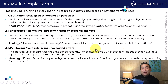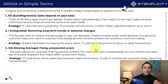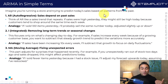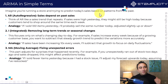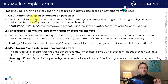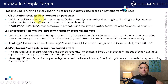Let's take a look at a practical example. Imagine that you're running a store and you're trying to predict today's sales based on patterns from the past — predicting the future based on historical data. I'm going to use three components. The first one is AR, the autoregressive part. Simply, sales in the future are going to be pretty much similar to the sales in the past.